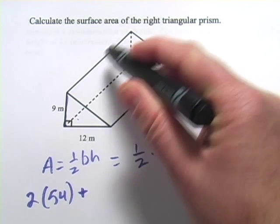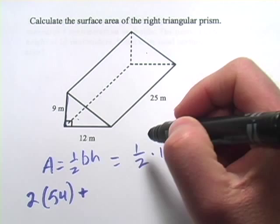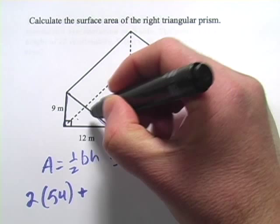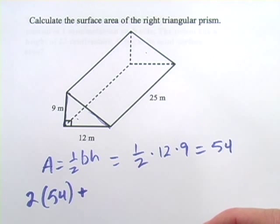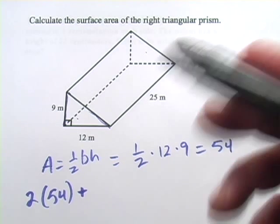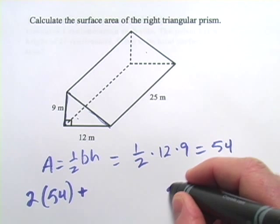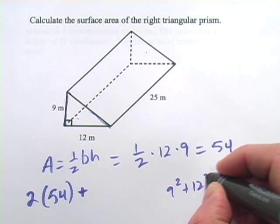The area of this surface right here, it is 25 meters long, but how wide is it? Well, it's the hypotenuse of this triangle wide, and that's not given to us. But since we're good with the Pythagorean theorem, we know how to figure that out. It's 9 squared plus 12 squared equals C squared.